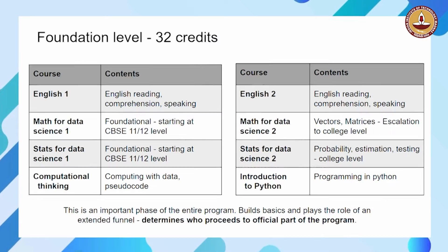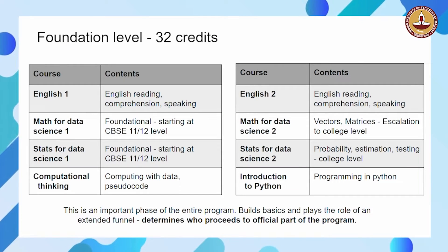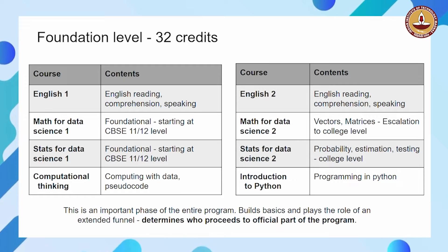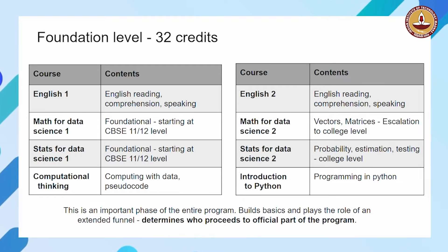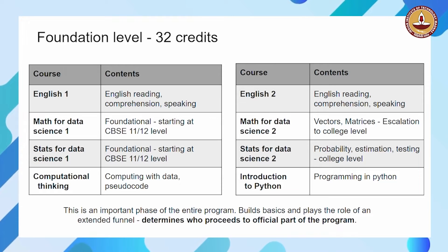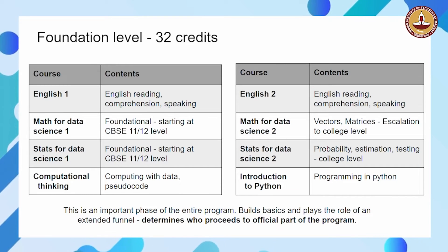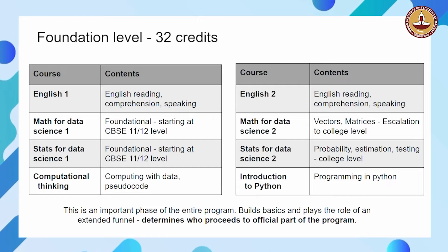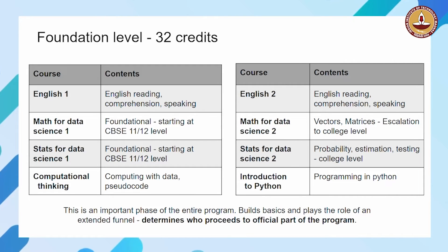This is very important and has been very carefully built. The first four courses are more or less at the 11th to 12th standard CBSE level, and they gradually and surely move you towards the college level. Math 2 and Stats 2 are definitely at the college level and they take you to the next level gradually.